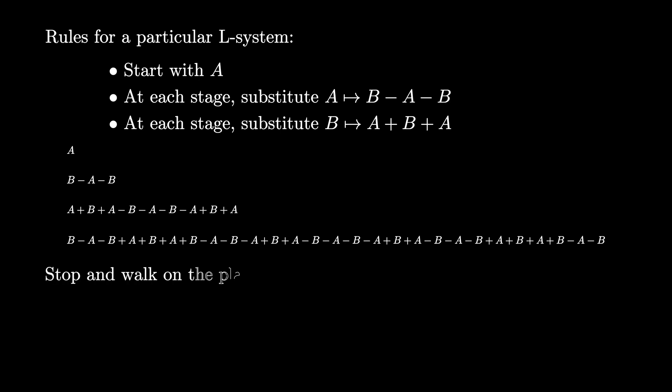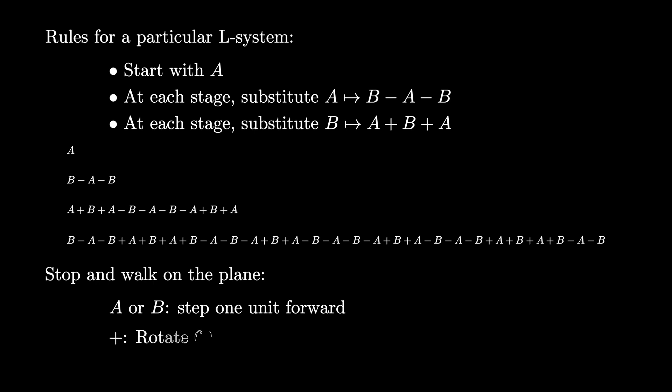Eventually, we can stop at a particular string and use it to walk on the plane. If we see a character of A or B, we will step one unit forward in the direction we're facing. If we see a plus sign, we will rotate 60 degrees to the left, and if we see a dash, we will rotate 60 degrees to the right.